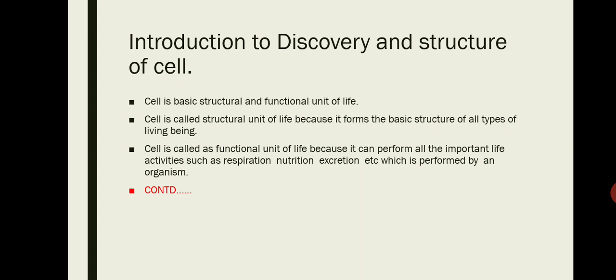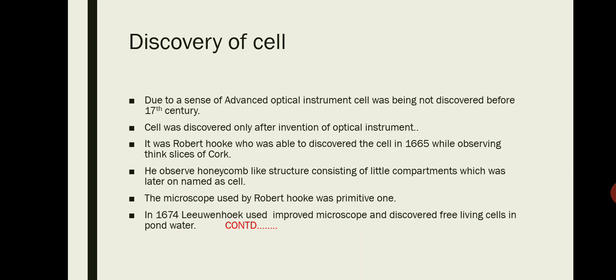Now, the discovery of cell. Due to a sense of advanced optical instruments, cell was not being discovered before the 17th century. Cell was discovered only after the invention of optical instruments. It was Robert Hooke who was able to discover the cell in 1665 while observing thin slices of cork. He observed honeycomb-like structure consisting of little compartments which was later on named as cell.